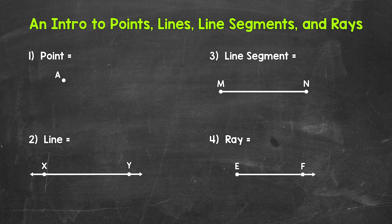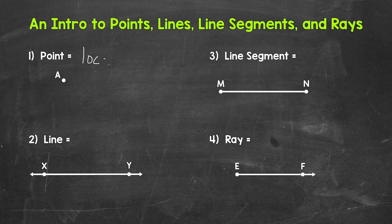We're actually going to start with points. A point is a location, a position. We use a dot to represent a point, and then a capital letter to name a point. So for example, we have point A. Now when it comes to points, they don't have any size. They are used to show a location, a position. So let's put 'a point is a location' for our notes.